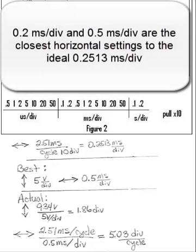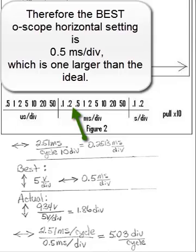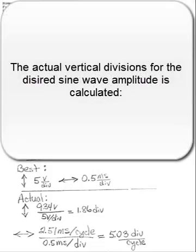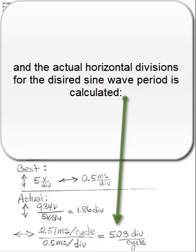0.2 milliseconds per division and 0.5 milliseconds per division are the closest horizontal settings to the ideal 0.2513 milliseconds per division. Therefore, the best oscilloscope horizontal setting is 0.5 milliseconds per division, which is one larger than the ideal. The actual vertical divisions for the desired sine wave amplitude is calculated. And the actual horizontal divisions for the desired sine wave period is calculated.